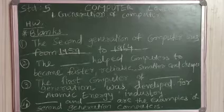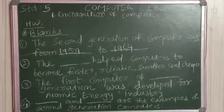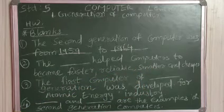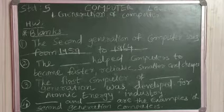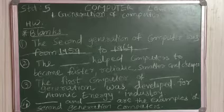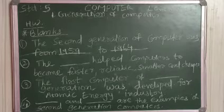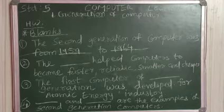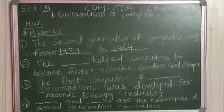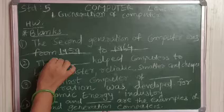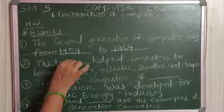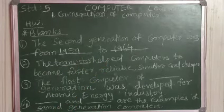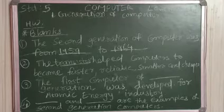The second one is, the blank helped computers to become faster, reliable, smaller and cheaper. In this generation computer, what is used that makes the computer faster, reliable, smaller and cheaper? Very good. Transistors. T-R-A-N-S-I-S-T-O-R Transistor.